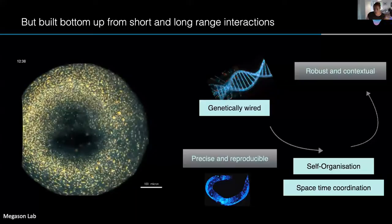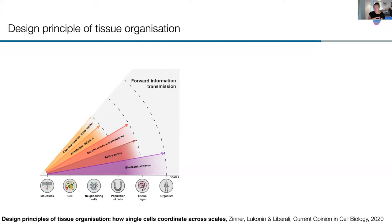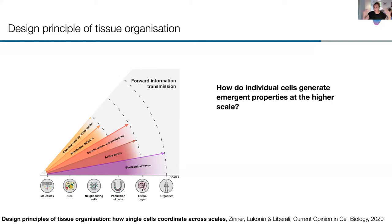The main question in the lab is how information is transmitted across different biological scales — how different molecules and cells can transmit information and what range they create, and what are these emergent properties. To make it robust, you need feedback from the tissue back to individual cells, where mechanics play a very important role in coordinating the system and making it much more robust.